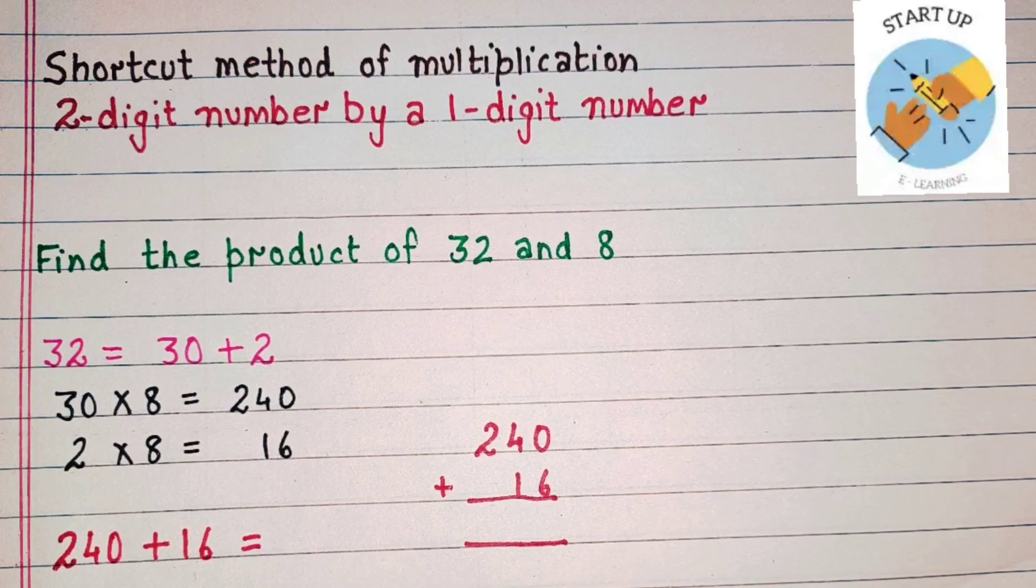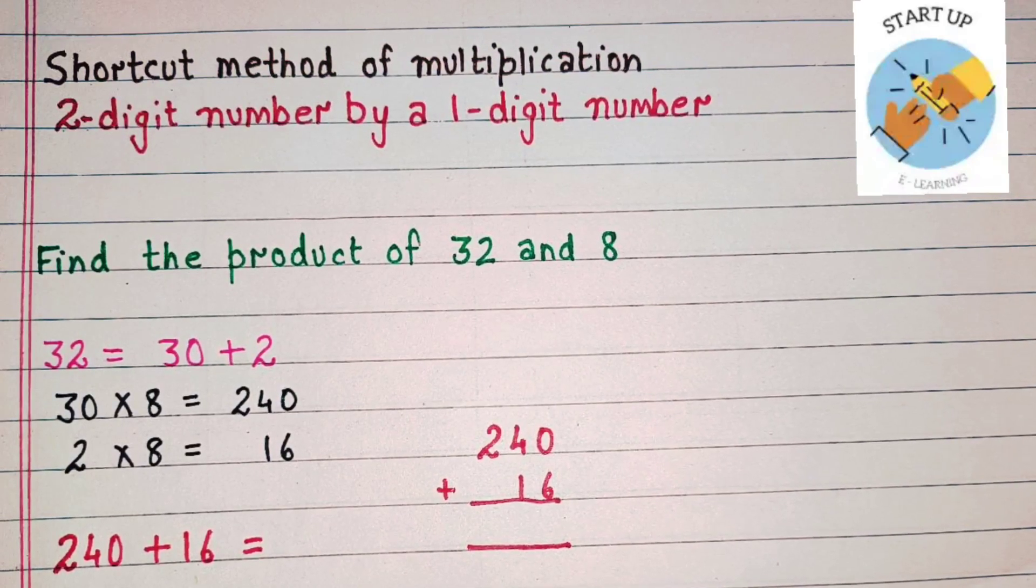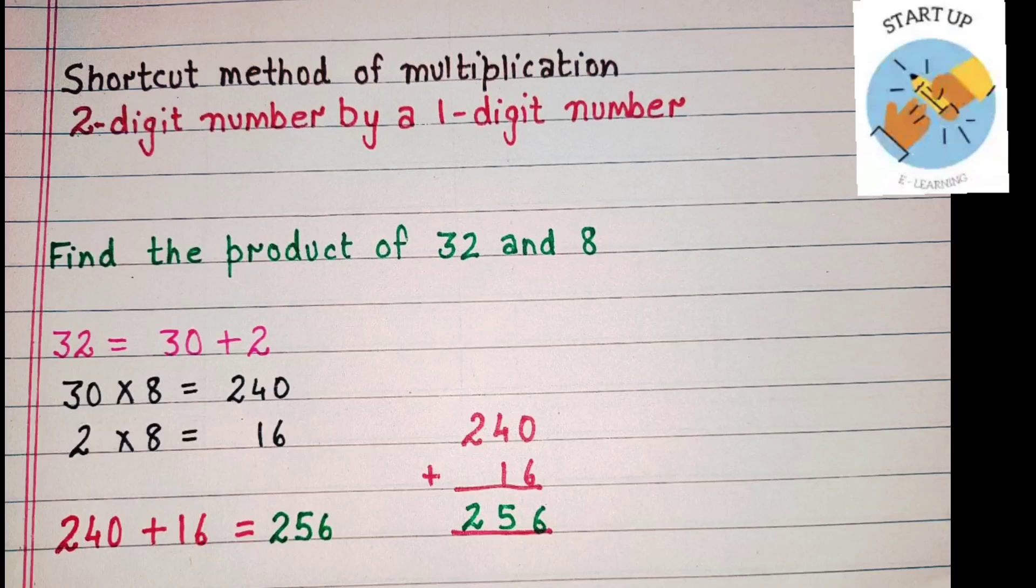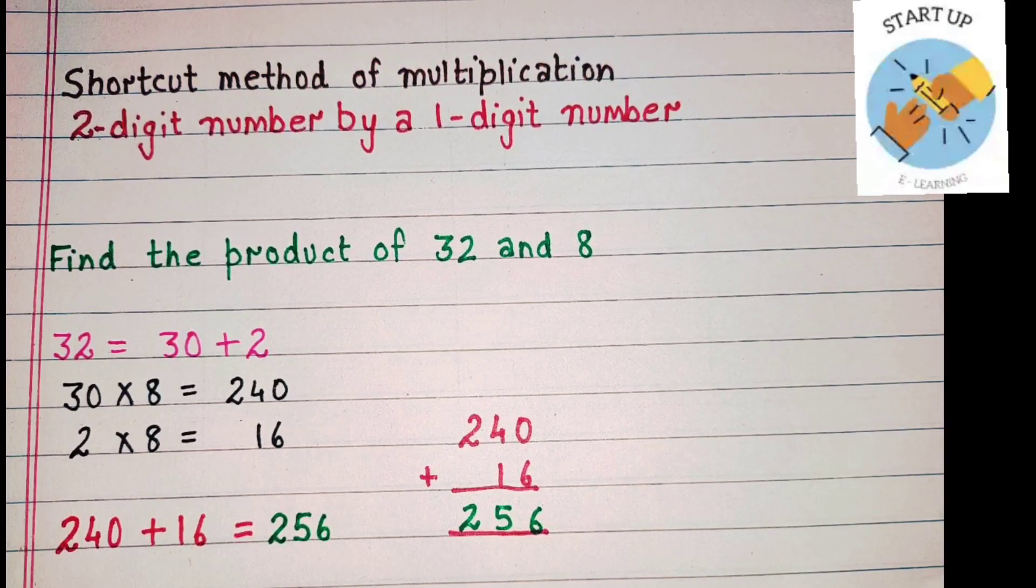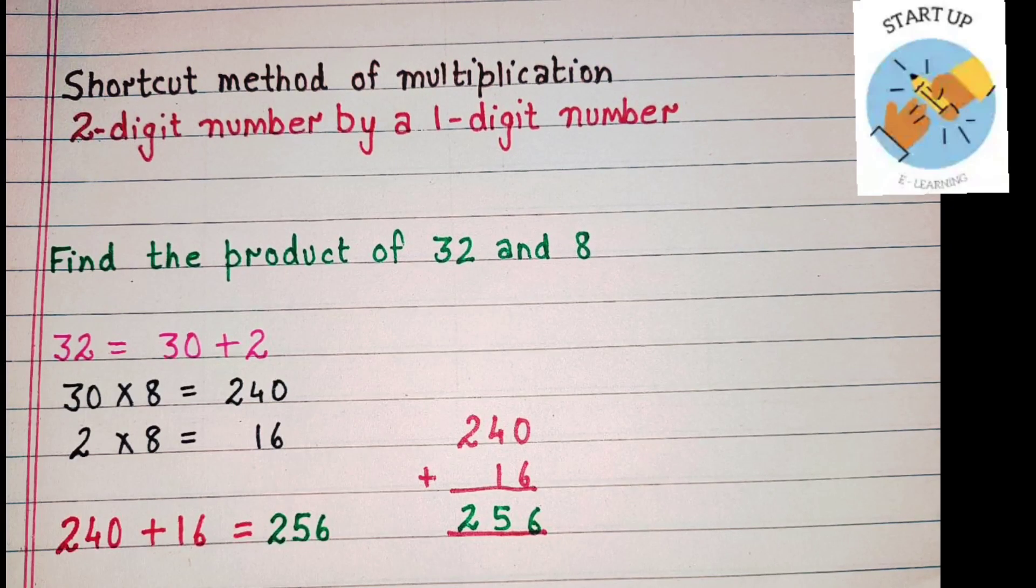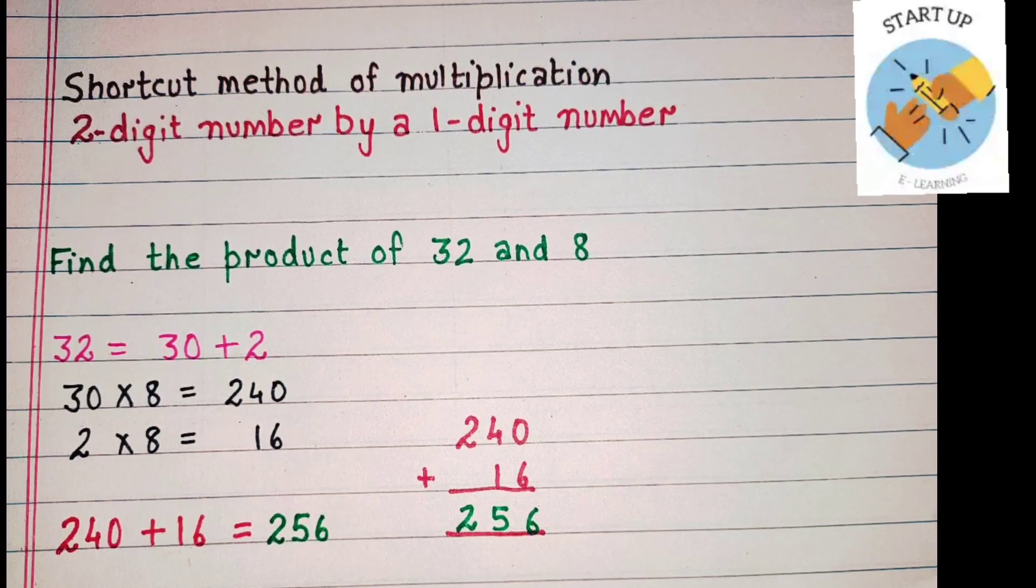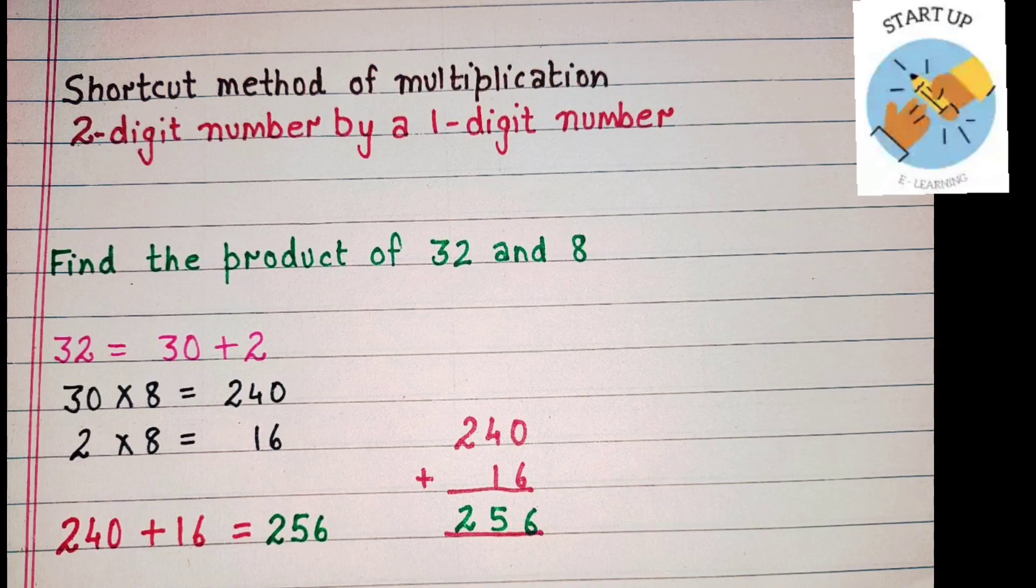You can use any of the methods, horizontal or vertical. Let's start adding from one's place. 0 plus 6 is equal to 6. 4 plus 1 is equal to 5. 2 plus nothing is equal to 2. 240 plus 16 is equal to 256.